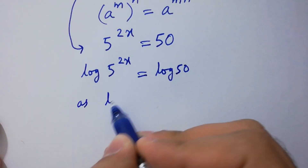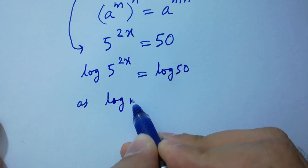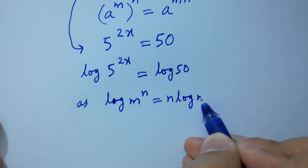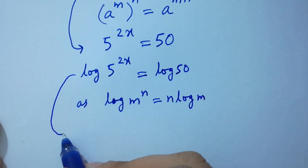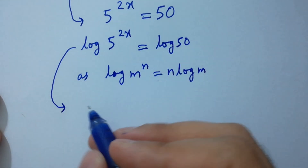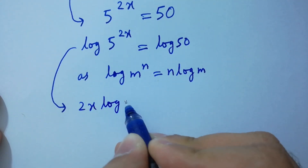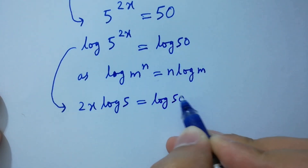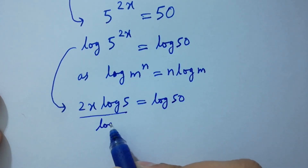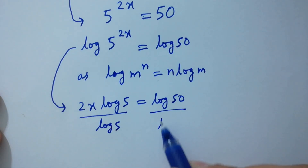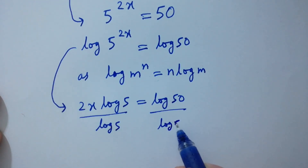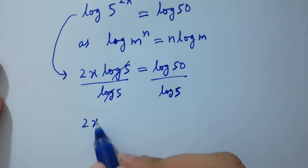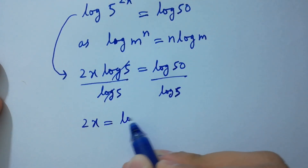As log m to the power n equals n log m, it will be 2x log 5 equal to log 50. Dividing by log 5 on both sides, log 5 cancels, giving 2x equal to log 50 over log 5.